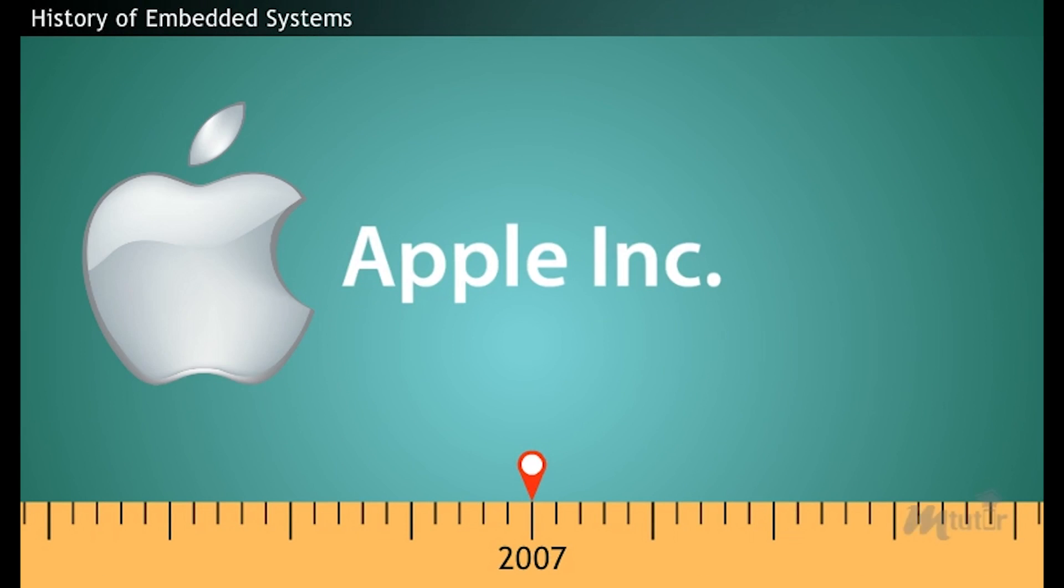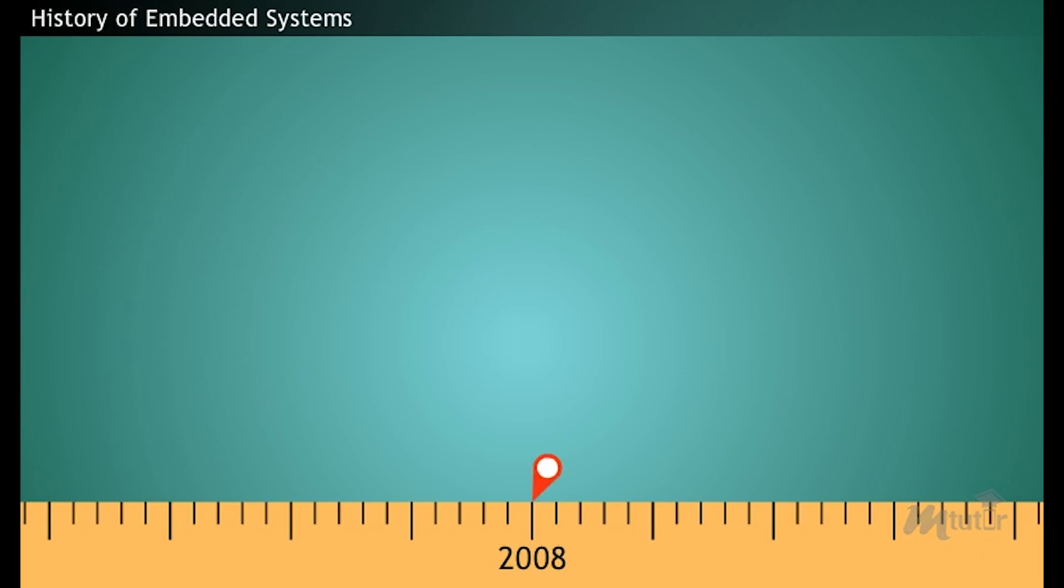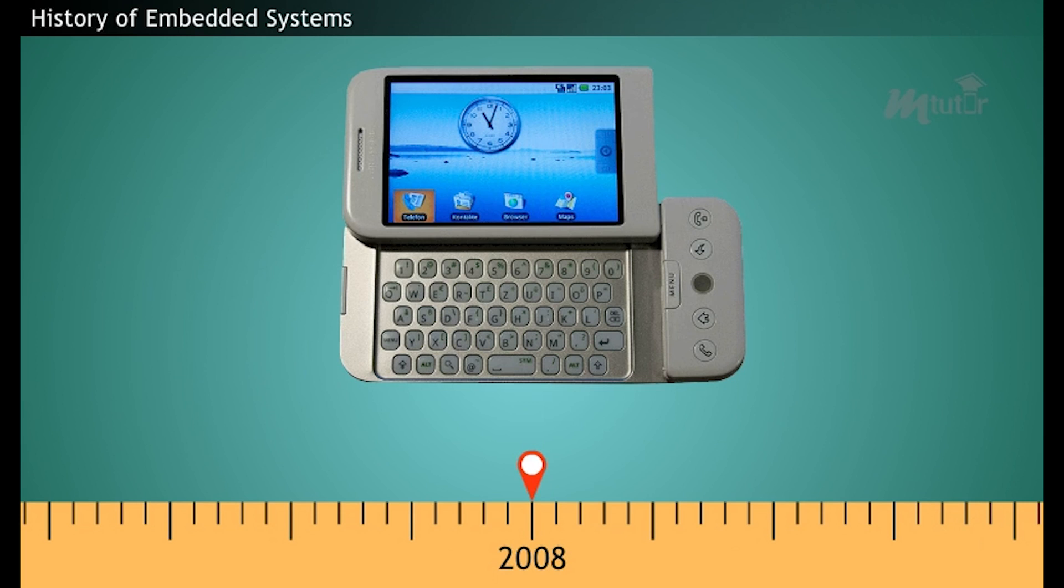And by the year 2007, the reputed American multinational technology company Apple released its first iPhone mobile. Following the Apple iPhone in 2008, the first Android phone was launched and the Android code became an open-source OS.